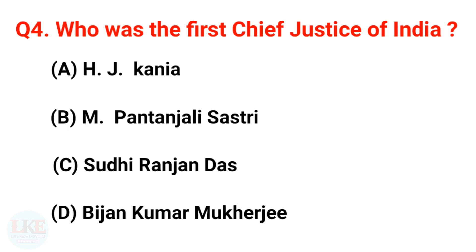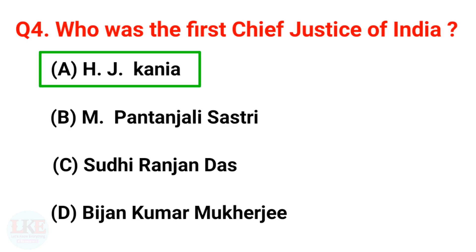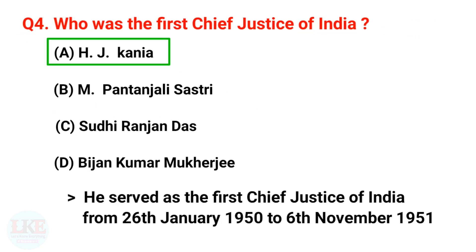Next question: Who was the first Chief Justice of India? Options: A) H.J. Kania, B) M. Patanjali Sastri, C) Sudhi Ranjan Das, D) Vivian Bose. The right answer is option A, H.J. Kania. He served as the first Chief Justice of India from 26th January 1950 to 6th November 1951.